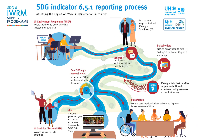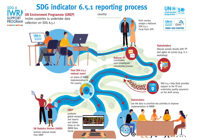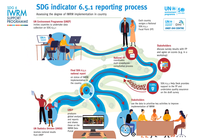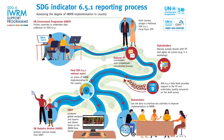The SDG 6.5.1 reporting process is laid out in this infographic. The UN Environment Programme, as custodian of Indicator 6.5.1, invites countries to undertake data collection. Each country then assigns a National SDG 6.5.1 focal point, or FP. These national focal points are responsible for coordinating a multi-stakeholder consultation process to ensure broad engagement to complete the survey.